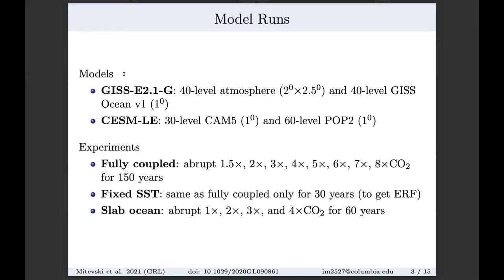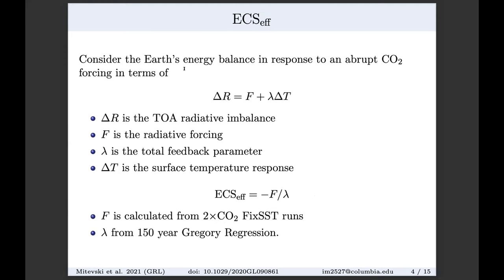We use two fully coupled atmosphere-ocean models: the GISS E2.1G model, which is the official CMIP-6 version of the GISS model, and the large ensemble version of the CESM model. We do fully coupled runs for 150 years, fixed SST runs to diagnose effective radiative forcing as per Forster et al. 2016 for 30 years, and some slab ocean runs. We calculate ECS effective as minus F over lambda, where F is from 2x CO2 fixed SST runs and lambda from 150-year Gregory regression.